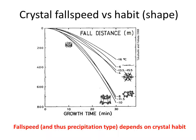Crystals of different shape fall differently. This plot shows fall distance versus growth time. Interestingly, the crystals that fall the fastest are those that grow the slowest — the isometric, more dense crystals, coming down around 800 meters in 30 minutes. The slowest falling crystals are the dendrites, which fall slowly because they grow outward and fall like a parachute. The fast-falling ones tend to become rime, while the slow-falling dendrites tend to cluster into snowflakes.